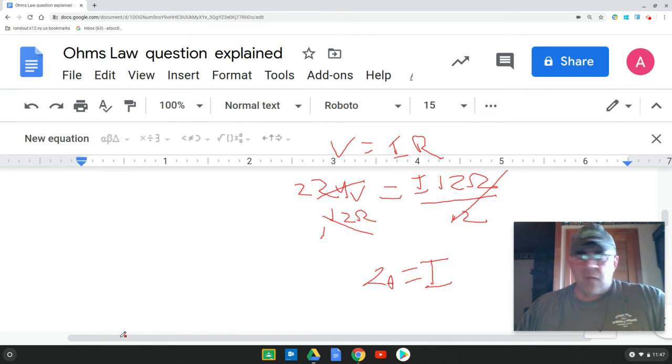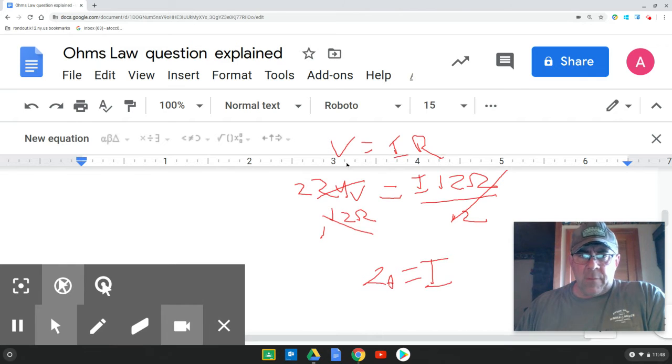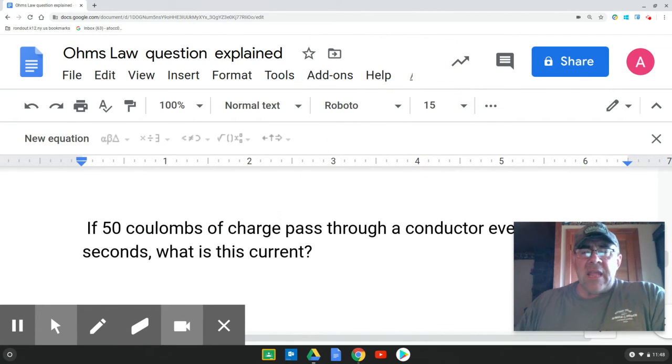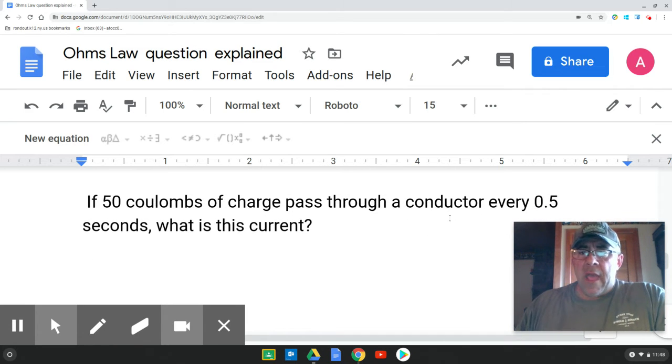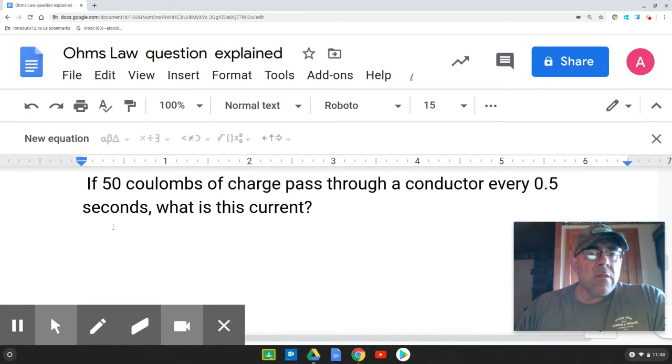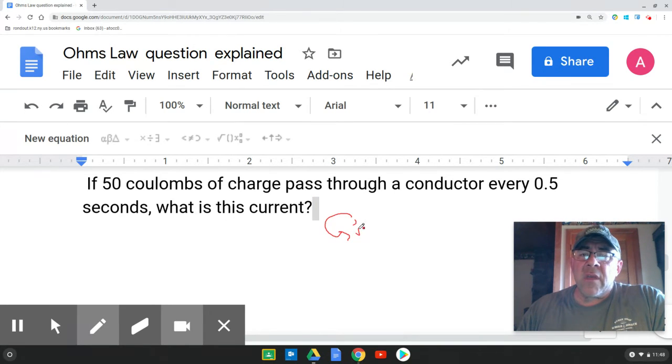As far as that is concerned, it was a pretty straightforward problem. The second problem. The second problem read, if 50 coulombs of charge pass through a conductor every 0.5 seconds, what is the current? Well, let's write down our givens. And we say given.